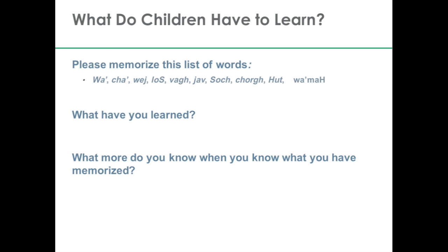Let me talk about the content covered in the practice guide — what do children have to learn in early math? As an exercise, I'm asking you to please memorize the words on the page that don't look like English words. If you could for a moment look at that list and try to imagine memorizing it — learning it so that you could repeat the list back. Then think about what you've actually learned. If you really could repeat that list from memory, you've memorized the list of counting words one through ten in the Klingon language from Star Trek.